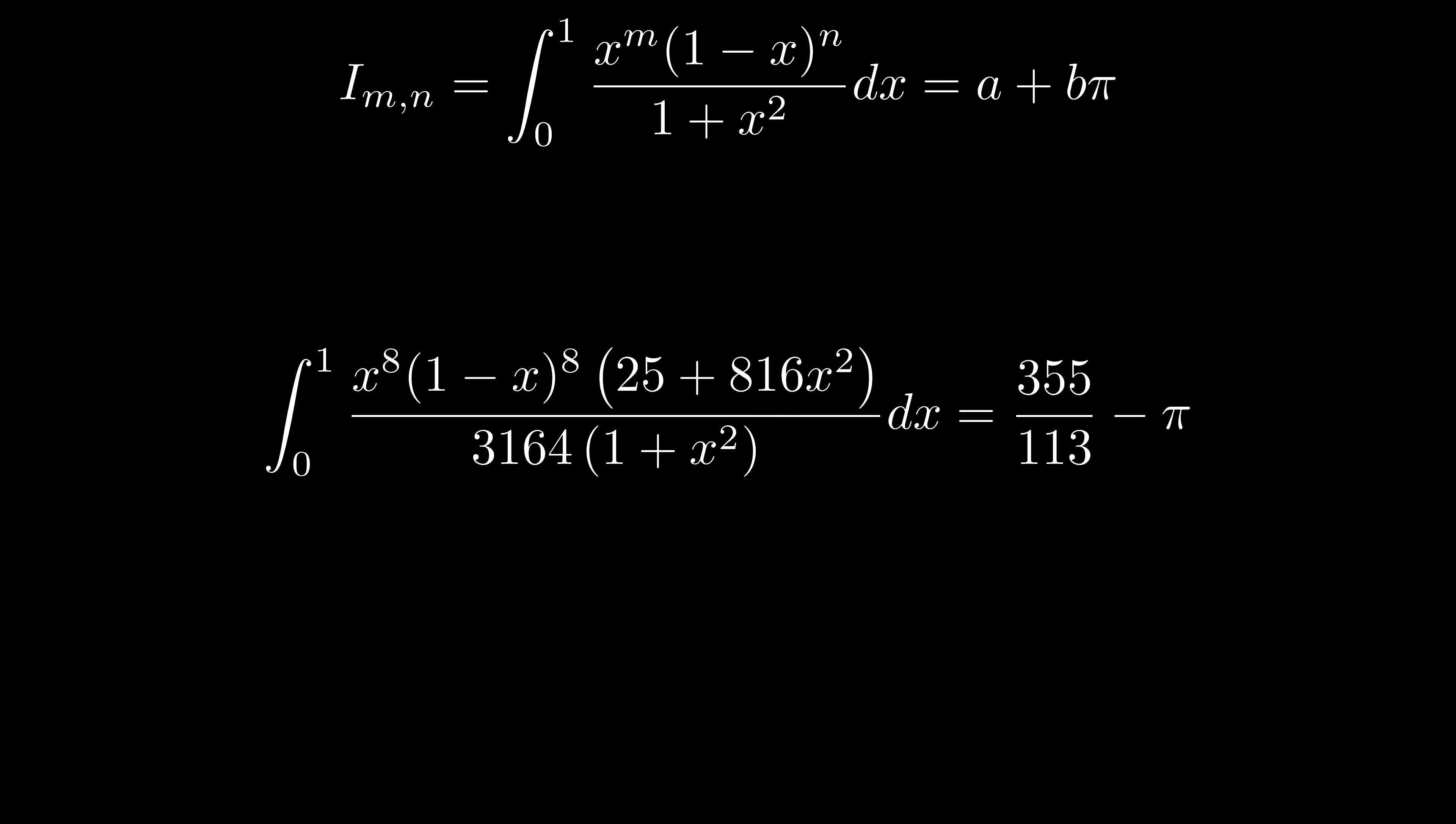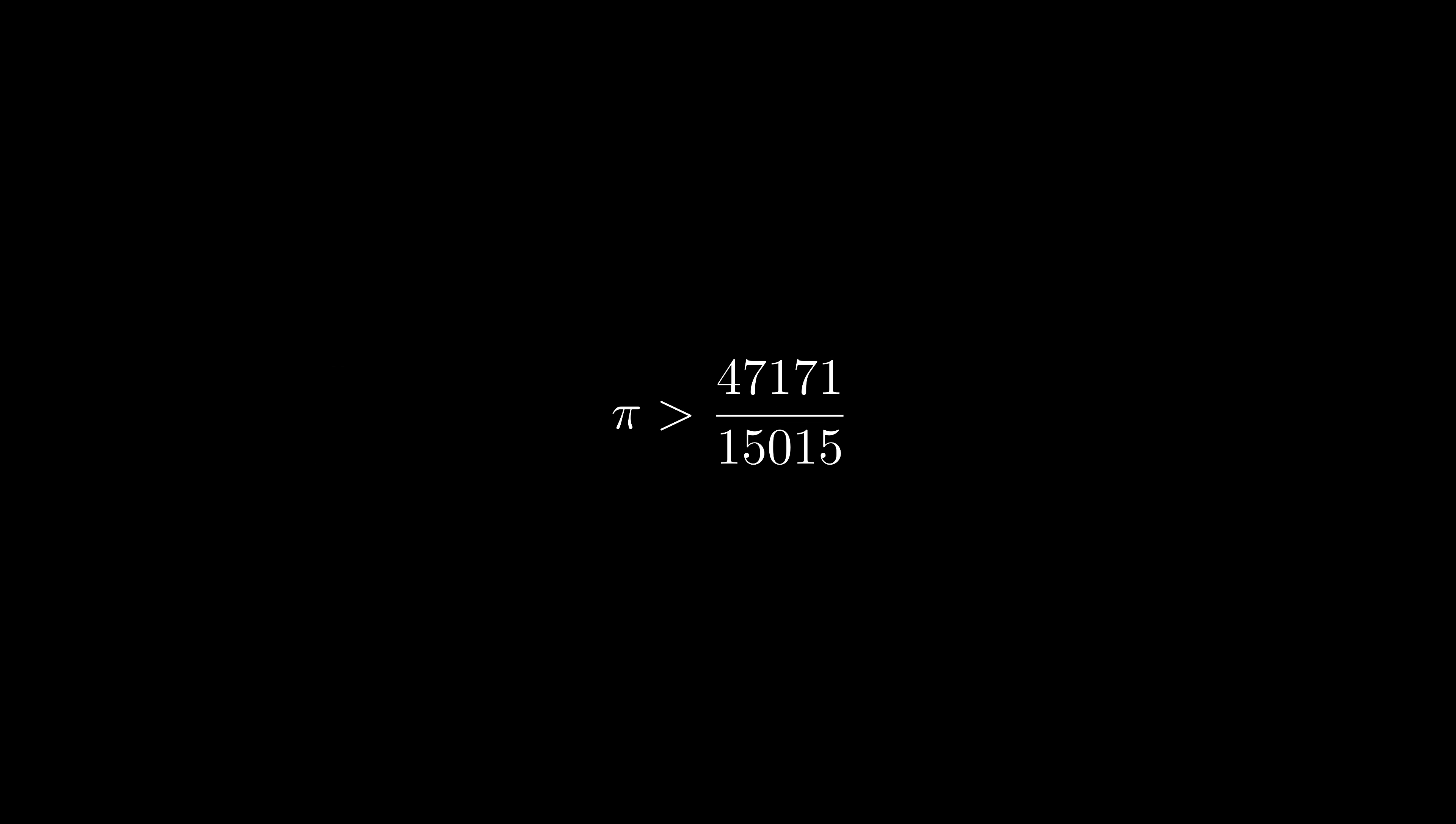For example, this modification gives us the familiar ratio 355 over 113. Another example is to prove this much tighter bound. We can simply pick the pancake function when m and n are both eight, and the proof becomes trivial.